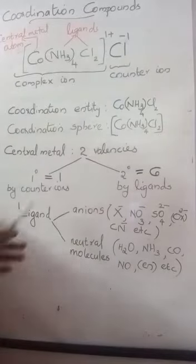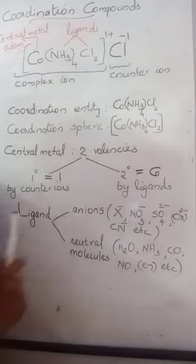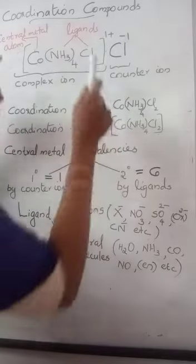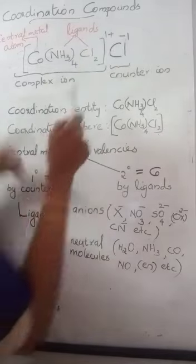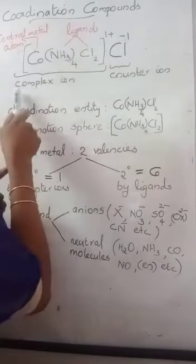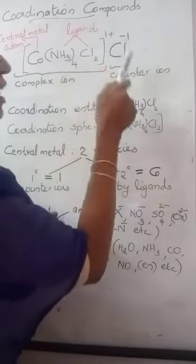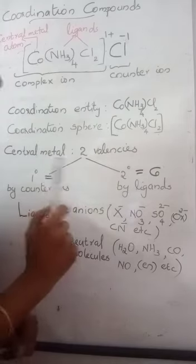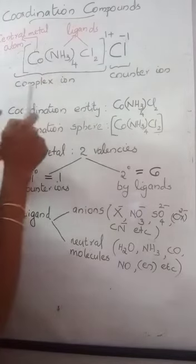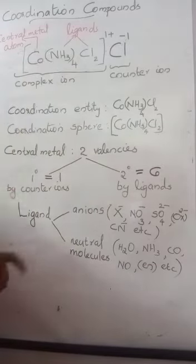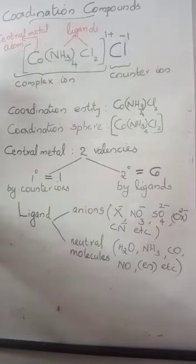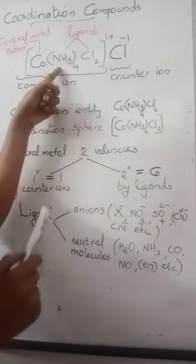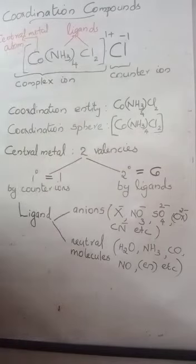One example of a coordination compound is cobalt (NH₃)₄Cl₂·Cl. A coordination compound contains two parts: a part included inside a square bracket, and a part outside the square bracket. The part inside the square bracket is called the complex ion, and the part written outside the square bracket is the counter ion. In the complex ion, we have a metal atom directly bonded to either anions or neutral molecules.